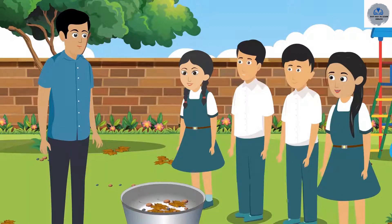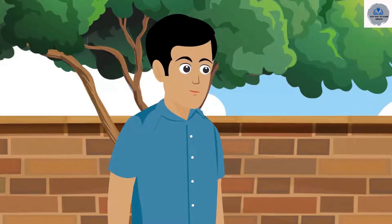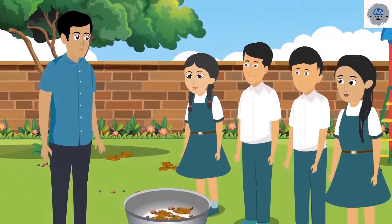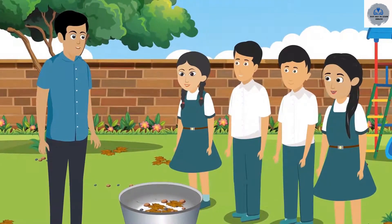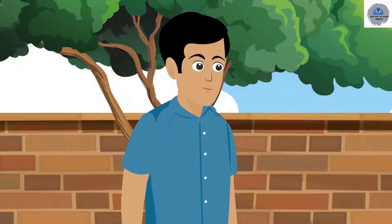What is separation? Sahil, when we separate a substance from any mixture, it is known as separation of substances. Rohit thought this is a great opportunity to discuss with everyone about the separation of substances. Children, can anyone tell me how we will separate this mixture? It will be done easily. We can pick up leaves and keep them in one place and pebbles in another place. Only the soil will be left in the tub. Sabina is absolutely right.